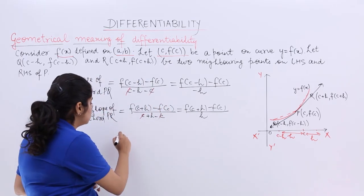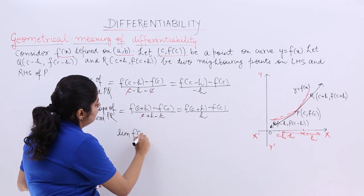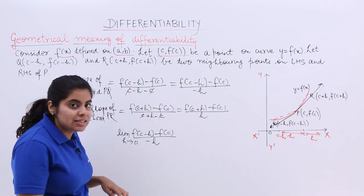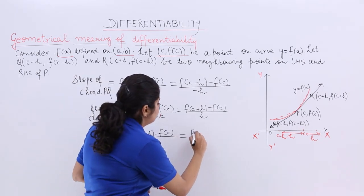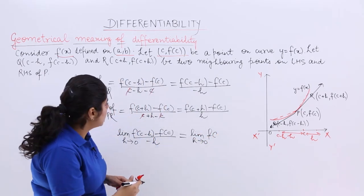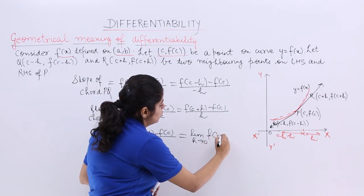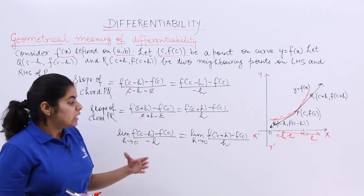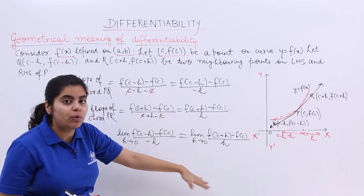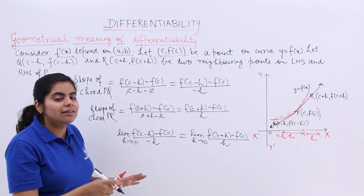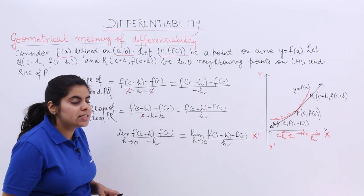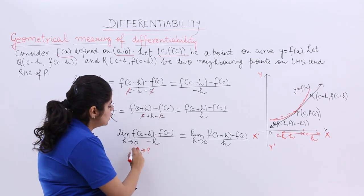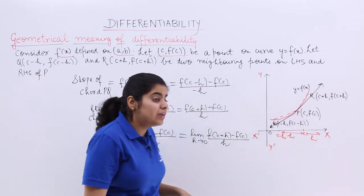The left-hand derivative will be: limit as h→0 of [f(c−h) − f(c)] / (−h). Similarly, the right-hand derivative is: limit as h→0 of [f(c+h) − f(c)] / h. These both should be equal. Putting the limits gives us the derivatives — the left-hand derivative and the right-hand derivative. The case with (c−h, f(c−h)) happens when Q tends towards P, and (c+h) and all happens when R tends towards P.